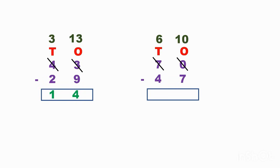Now I can subtract. Ten minus seven: hold ten fingers and take out seven, or count from seven up to ten. You can use both methods. Ten minus seven is three, and six minus four is two. So seventy minus forty-seven equals twenty-three. This is the procedure for subtraction with borrowing.